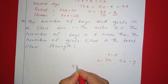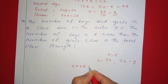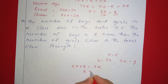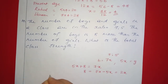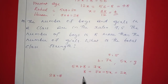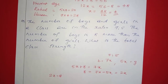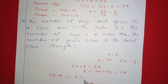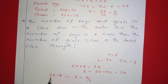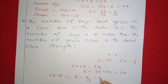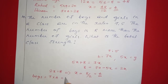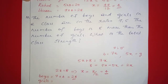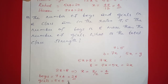So, 7x equals 5x plus 8. Therefore 7x minus 5x equals 8, which gives 2x equals 8. So x is equal to 8 divided by 2, which is 4. Boys equals 7x, that is 7 times 4 equals 28. Girls equals 5x, that is 5 times 4 equals 20.